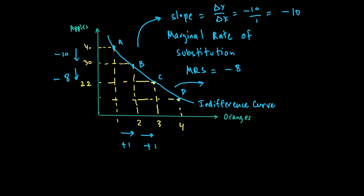Similarly, moving from C to D, the value goes from 22 to 17, so the MRS is −5. The negative sign simply means the graph is downward sloping — more oranges are needed to compensate for the loss of apples. Also notable is that as we move down the curve, the MRS is diminishing: from −10 to −8 to −5. This is the concept of diminishing marginal rate of substitution.